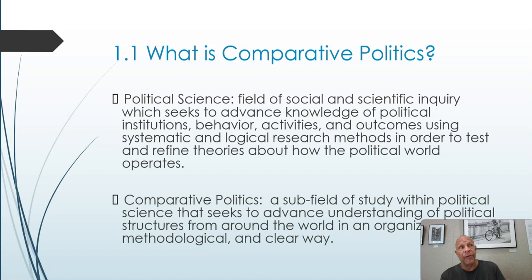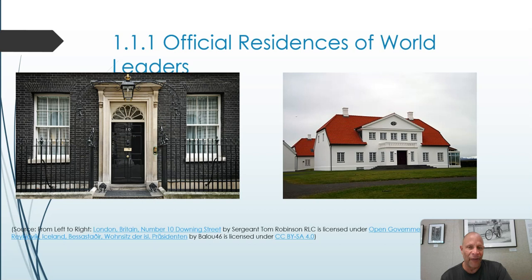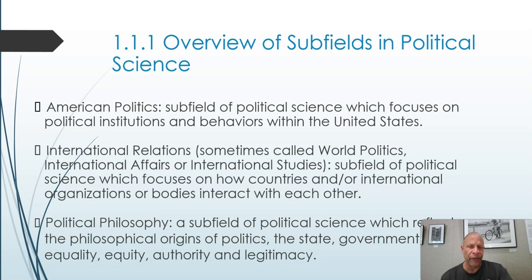When you compare systems you can't just say one size fits all — that's really the beauty of it. Comparative politics recognizes that politics is constantly changing, and because it constantly changes, we have to be able to step back and change with it. Now on screen you can see pictures of various famous government residences: the White House, the Japanese palace, the Royal Palace in Spain, 10 Downing Street in England, and the seat of government for Iceland.